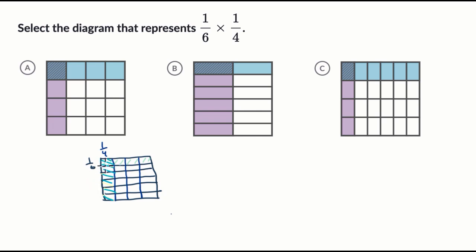And then their overlap would be right over here. So this would be 1 sixth times 1 fourth. And that's actually 1 24th of this entire square.